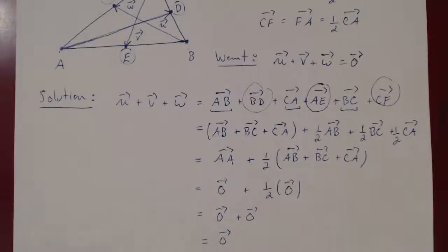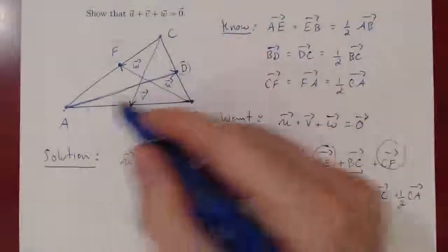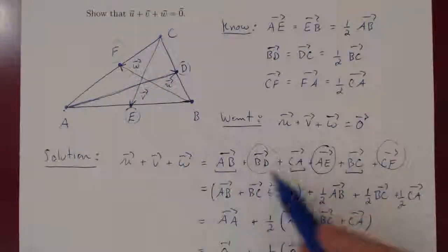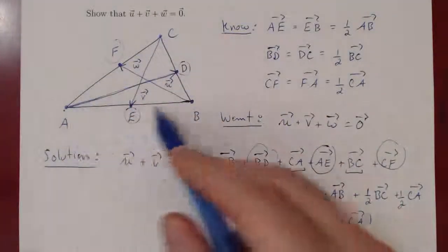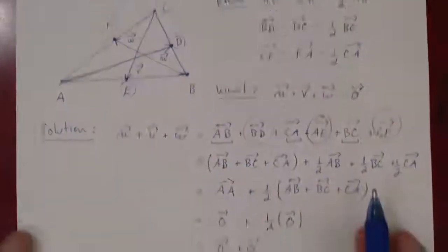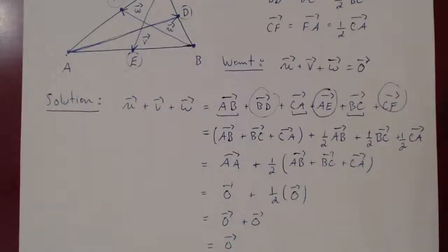So the only idea here that we had to use, and we used it twice, was that instead of walking along these vectors, instead of adding them directly, we can find a way to add by walking along the perimeter of the triangle. And if we complete one full perimeter, we know that the end result is the zero vector. And that's this problem.